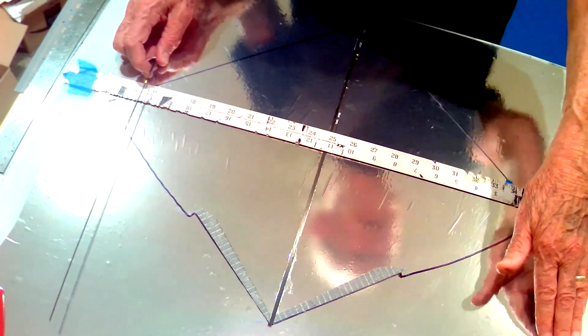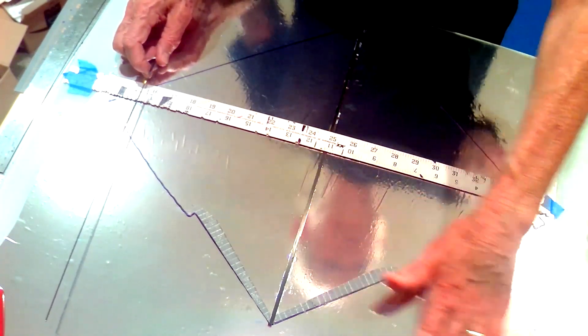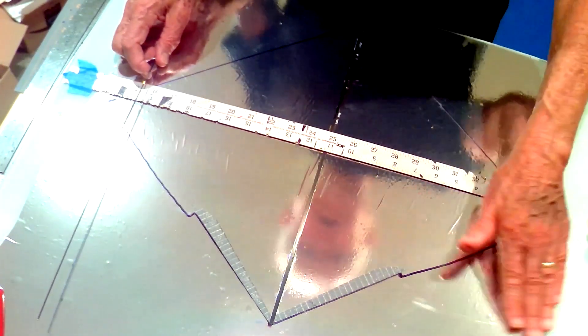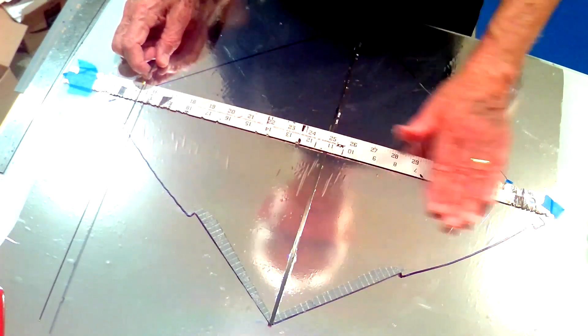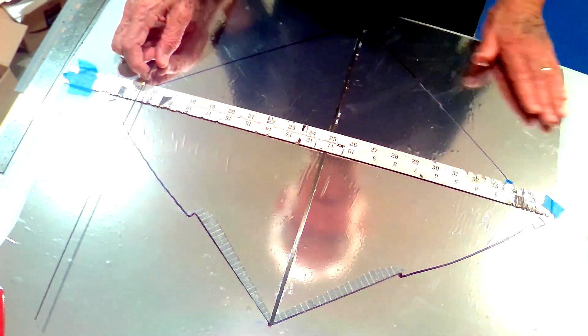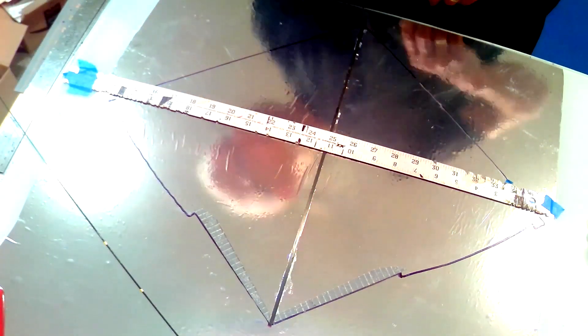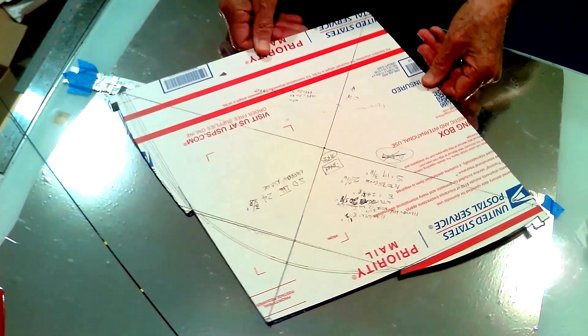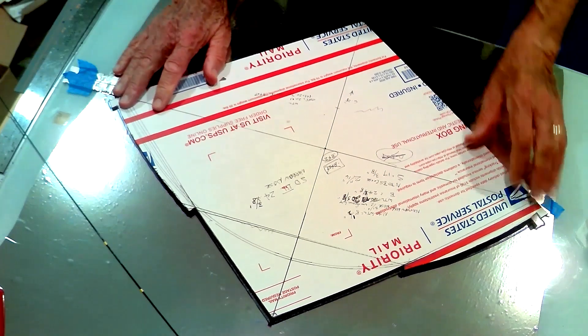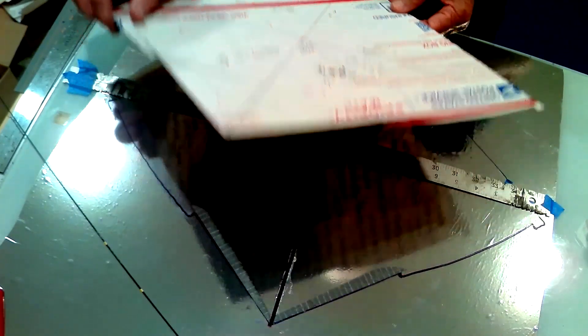I spritzed the glass with water, spread the polyfilm out, got as many of the bubbles and wrinkles out as I could, and then I drew around my template with a broad marker so that you could see it.